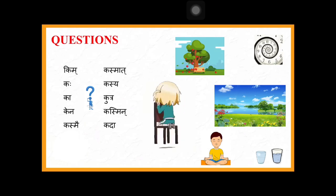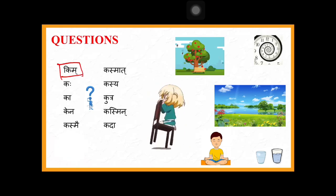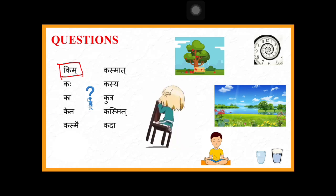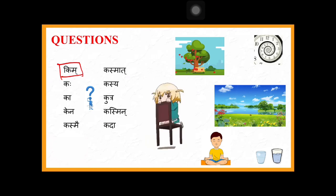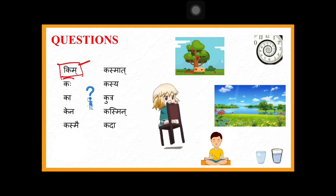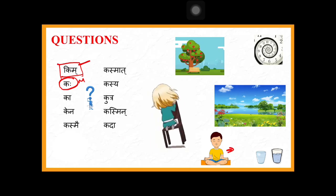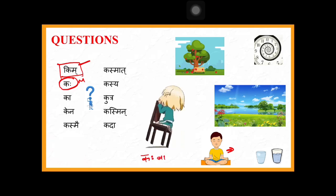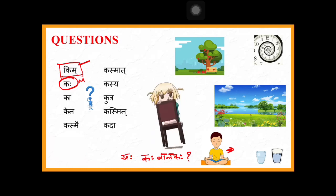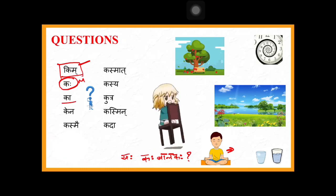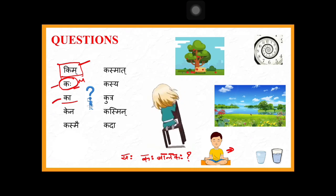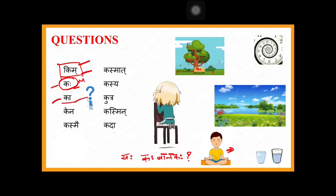Now question words. Kim is a general question word used for everything — no gender. Kim sa karoti? Tasya nama kim? Tat kim asti? Then kaha is used only for boys, masculine gender. Example: kaha balakaha? Saha ramaha, saha krishnaha — that is how kaha is used. Ka is for strilinga, kim is for all. Kena means 'by what' — used when asking about the instrument or means.